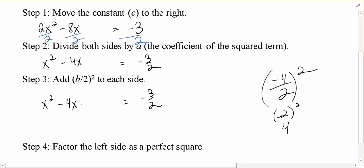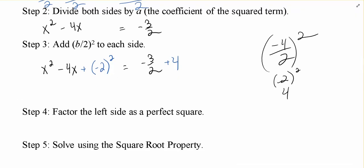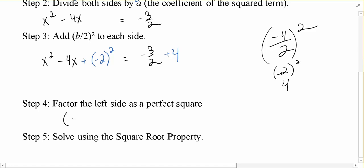So if I add this to both sides, I'm adding (-2)² or 4. So once I factor the left-hand side, it factors as (x - 2)².